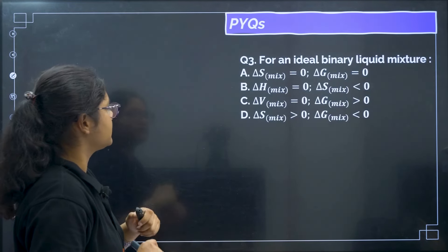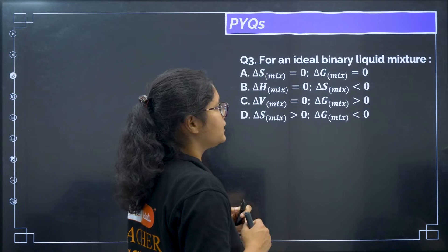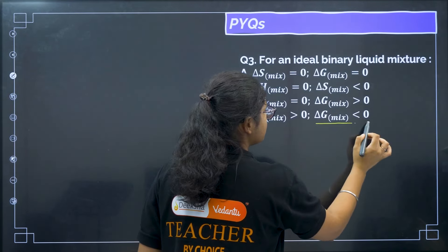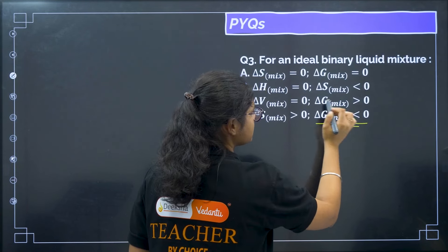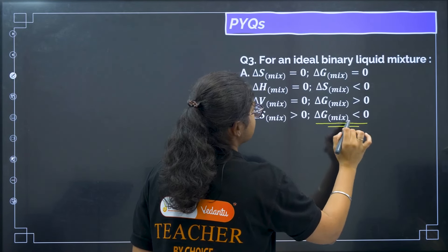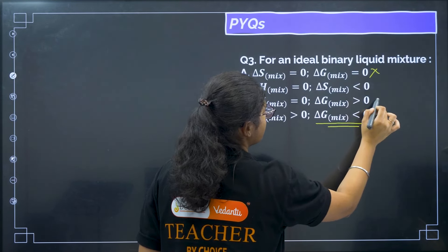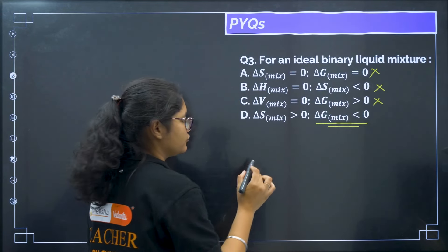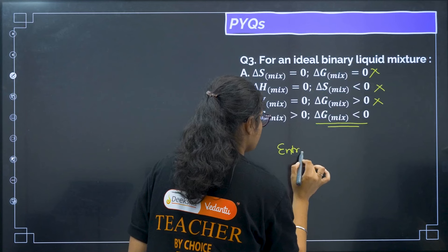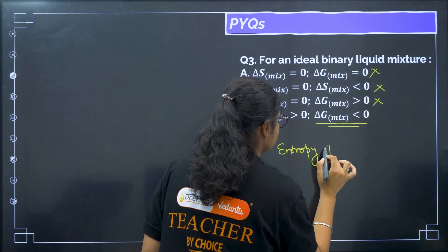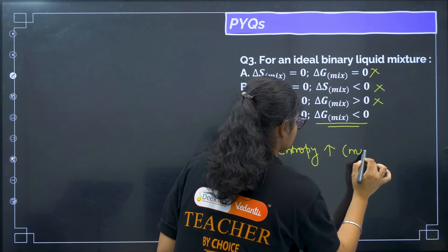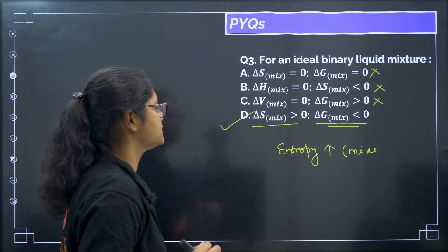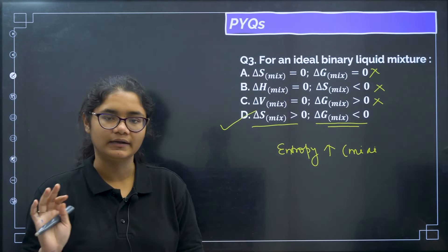Question 5: for an ideal binary liquid mixture, which statements are correct? For any spontaneous process ΔG_mix must be less than zero (negative). ΔS_mix is always greater than zero because entropy always increases upon mixing. So ΔG_mix must be negative and ΔS_mix must be positive. Correct answer: option D.